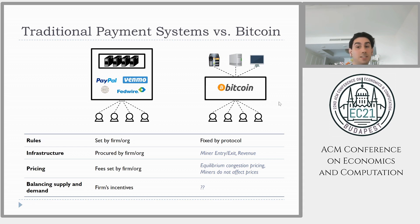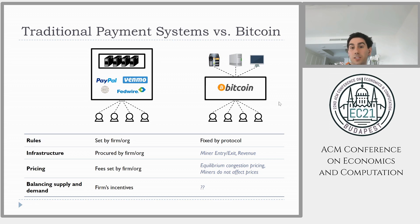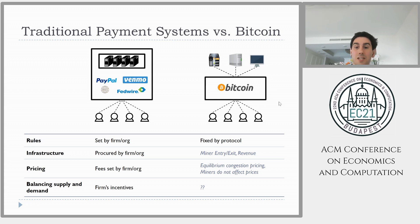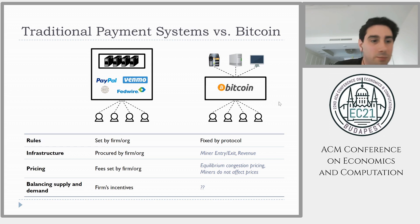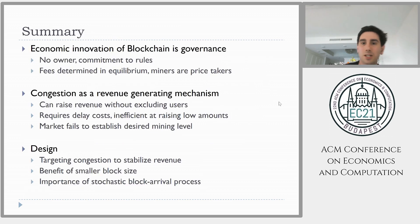Let me conclude by really encouraging the community to think about market design issues here. This is a genuine instance where you get to design a market — it has to be a decentralized system with a lot of computer science constraints and interesting economic constraints. I think it's fascinating and I hope we'll see much more work about this and better market designs in future versions. Thank you very much.